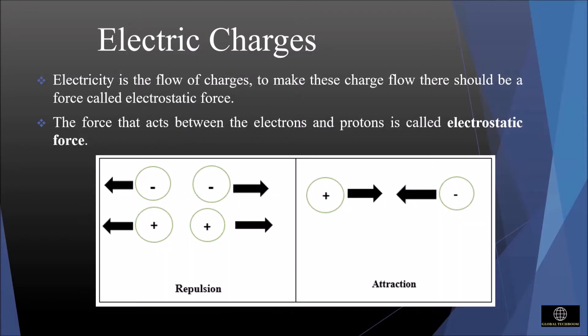Let us discuss electric charges. An atom has three particles: electron, proton, and neutron. A negatively charged particle is called an electron while a positive charge is called a proton.